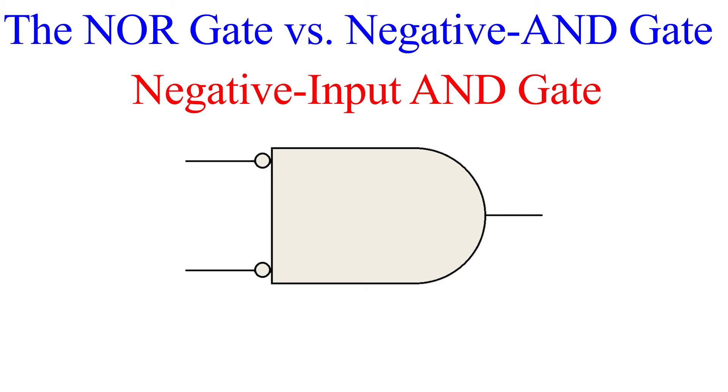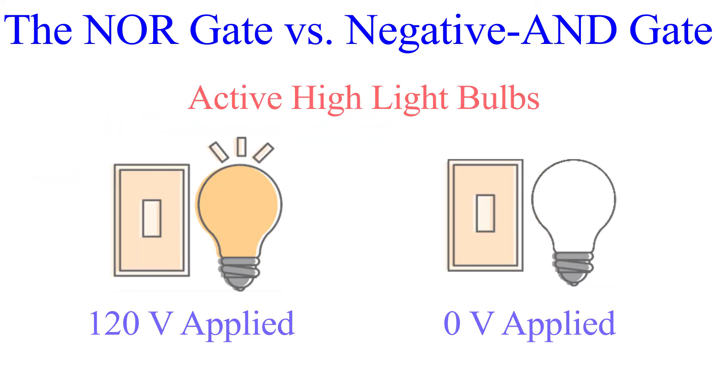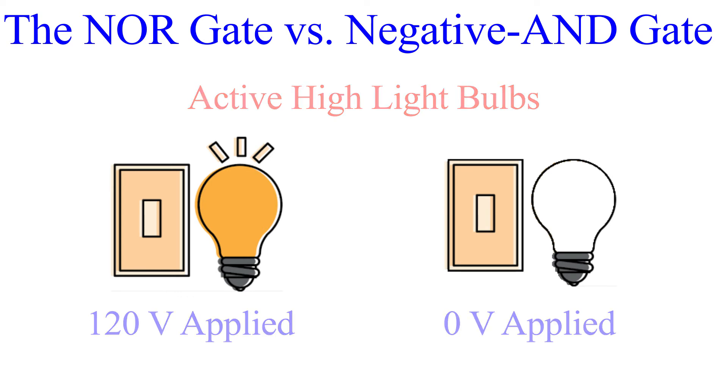So the question we must ask ourselves is: when do I use one and not the other? Just like the negative OR gate, the term negative AND is meant to express the fact that the inputs are in an active state when they are low. The NOR gate, like all the other gates we have looked at up to this point, have inputs that enter an active state when they are high. Think of it like this: an active high—the light turns on when a signal is present. However, an active low—the light turns on when there is no signal present.